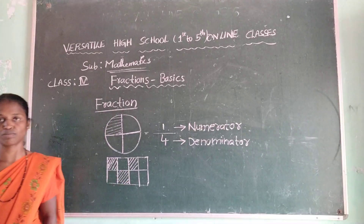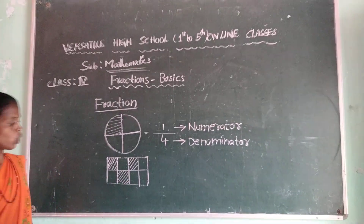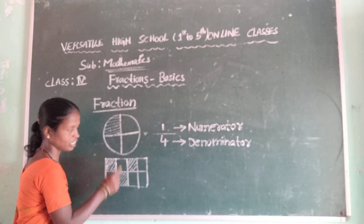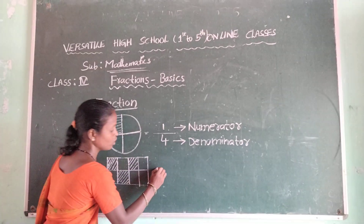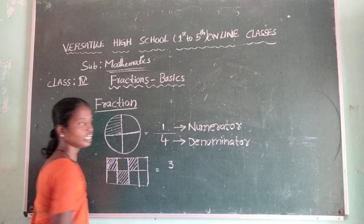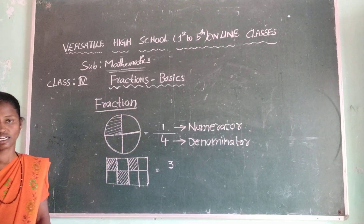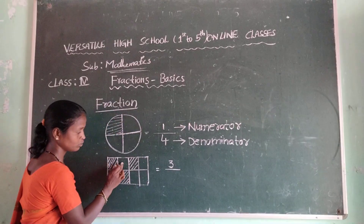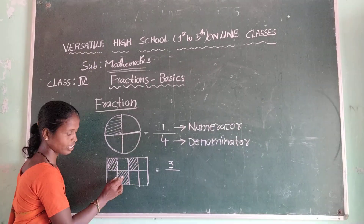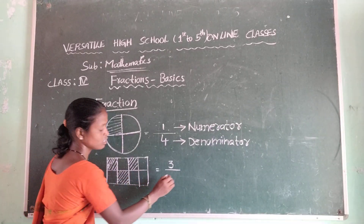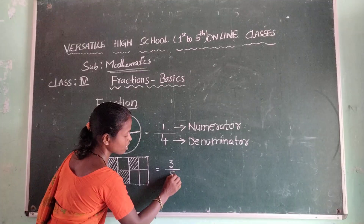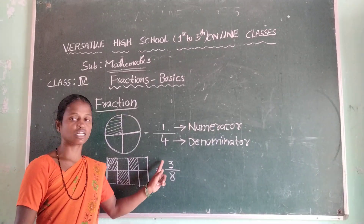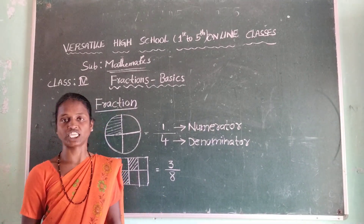Here, observe the shaded parts. How many parts are shaded? One, two, three. Three is called a numerator. And total parts are one, two, three, four, five, six, seven — so total parts are eight. Eight is the denominator. Then we have to say that three by eight is called a fraction.